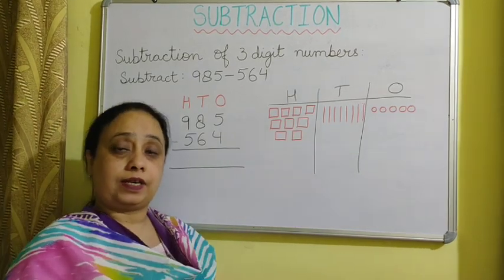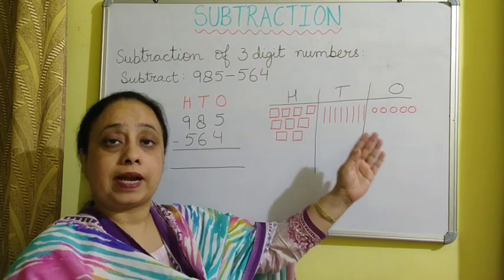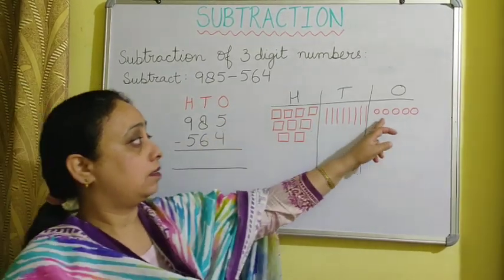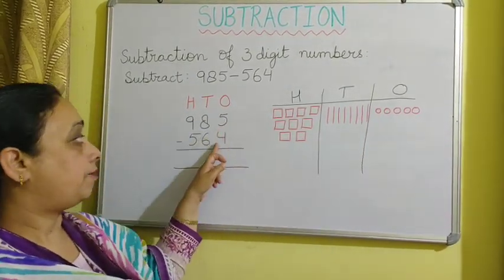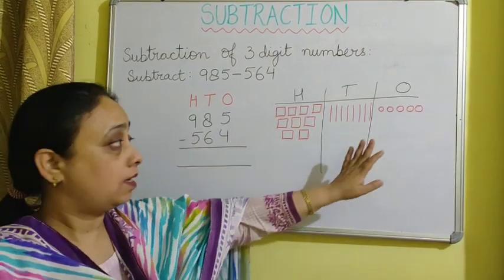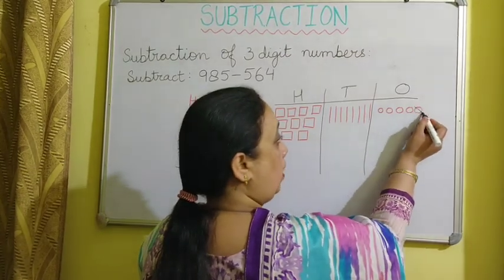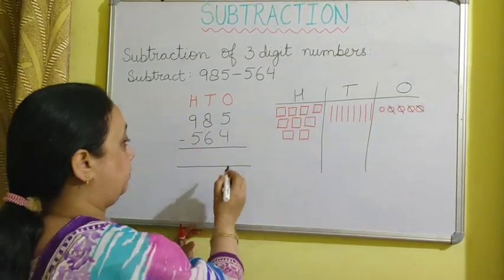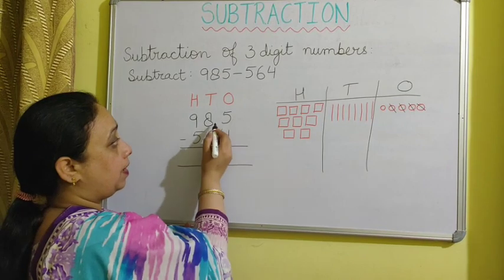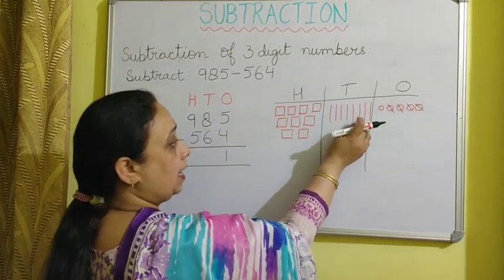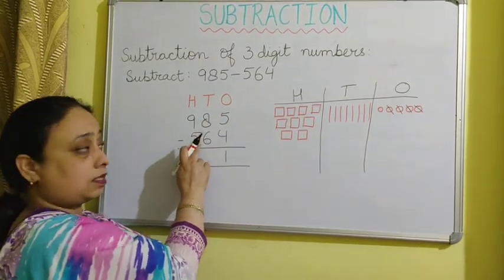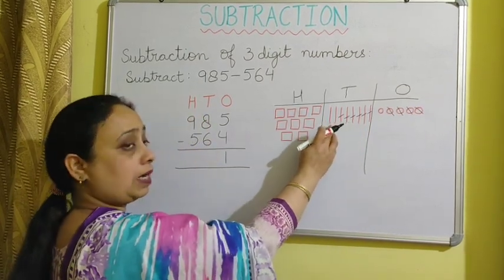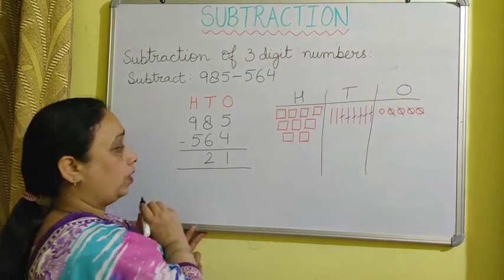As we do in addition, we start subtraction from the rightmost side — the ones place. We have 5 ones and we take away 4 ones, leaving 1. So we write 1. Next, we have 8 tens and we take away 6 tens, leaving 2. So we write 2 in the tens column.